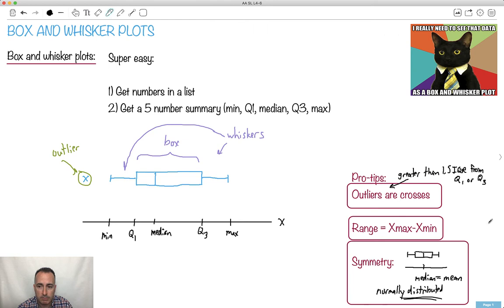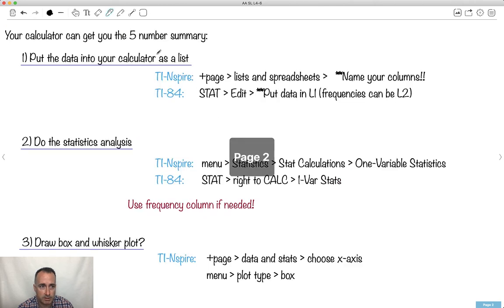It's surprisingly easy. All you have to do is get the numbers on the list and get the five number summary. You put on your calculator, depending on if you have the Inspire or the 84, you put the stuff into a list, you name your columns. You go stat, edit, and put it in L1. If you have frequencies, they're L2.